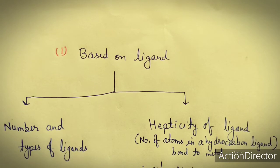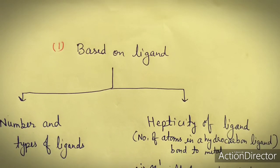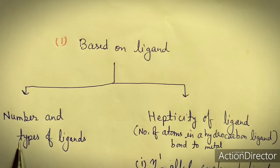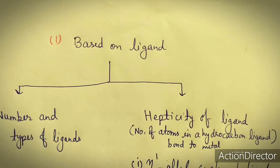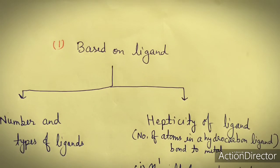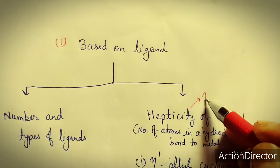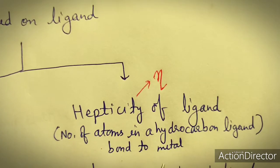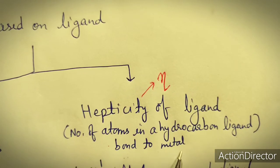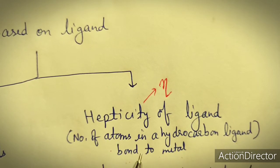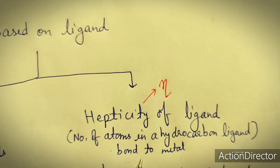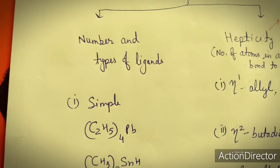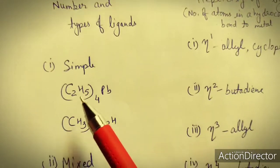The first classification is based on ligand. Organometallic compounds may have different numbers and types of ligands. The other basis is the hapticity of the ligand, which can be denoted by eta. Hapticity is the number of carbon atoms in a hydrocarbon ligand bonded to the metal. Based on the number and types of ligands, organometallic compounds may be simple or mixed.